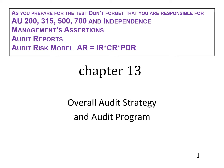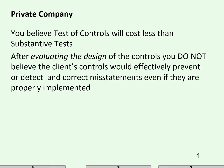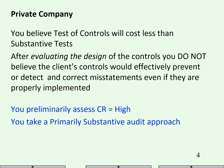Today we're going to wrap up Chapter 13 and play what I call the audit approach game. We're going to start out with private companies — not covered by Sarbanes-Oxley, not subject to SEC. We believe tested controls will cost less, but when we evaluate the design of the controls, we do not believe the controls will be effective. If the controls are not effective, we preliminarily assess control risk is high and we're going to take a primarily substantive approach.